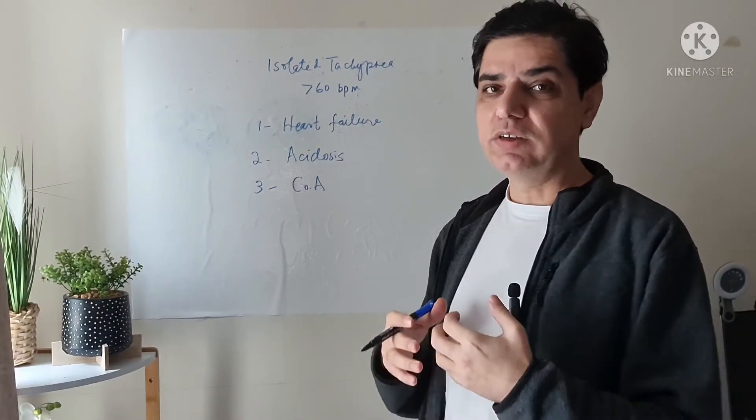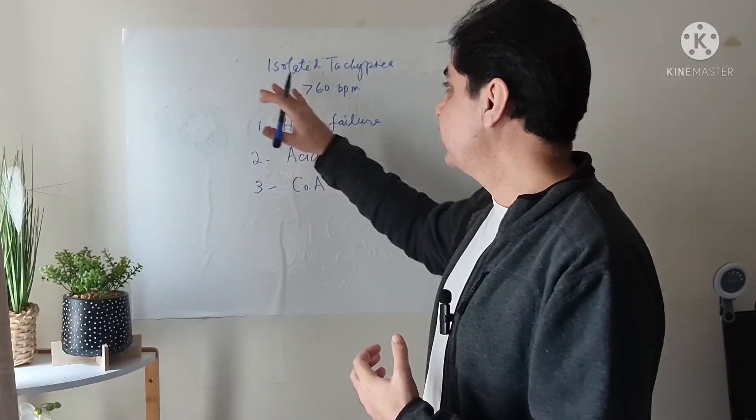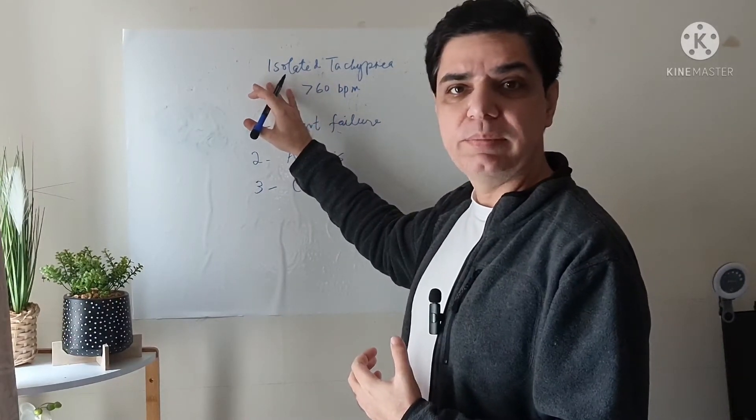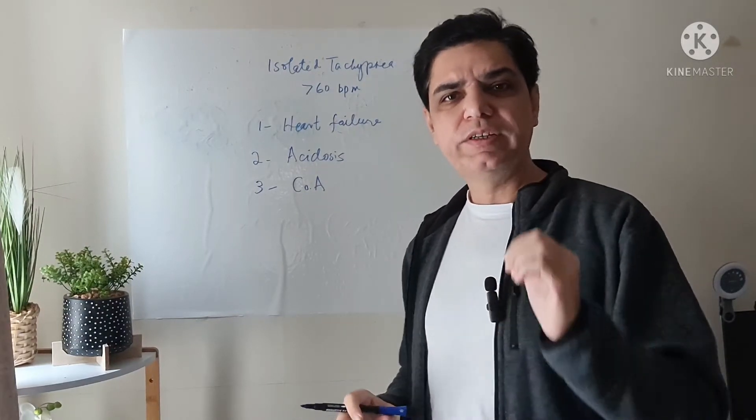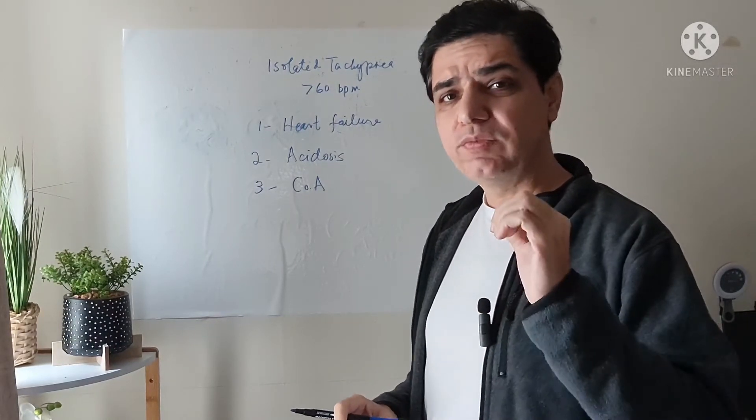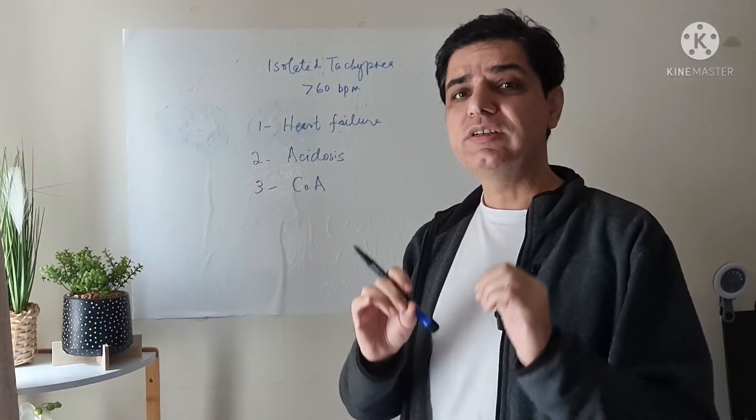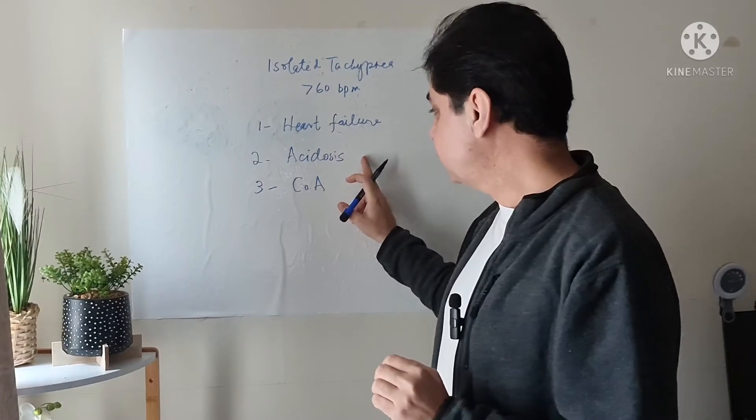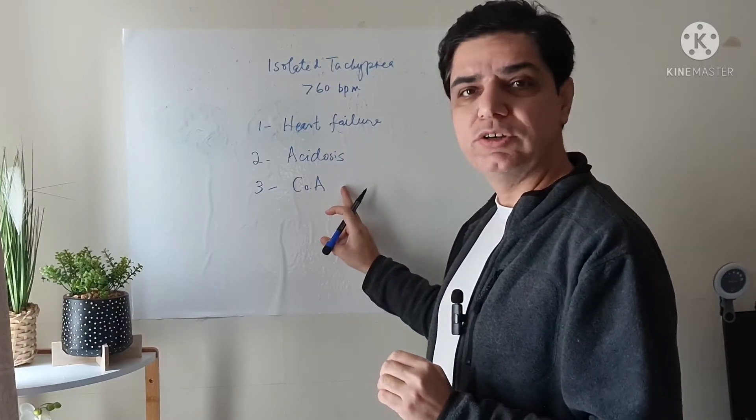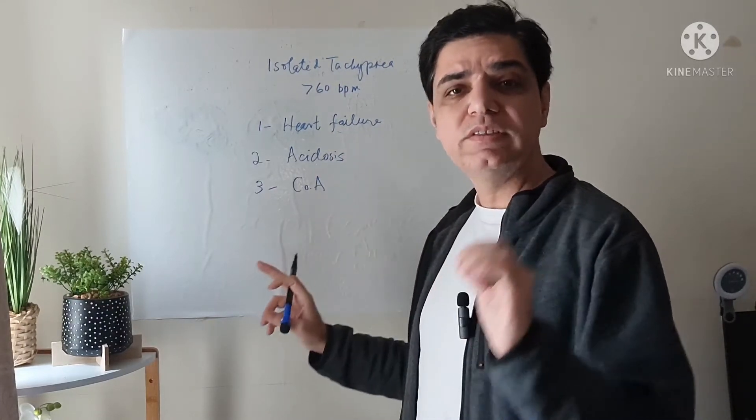That can lead to shock, that can lead to signs of heart failure, and that can lead to isolated tachypnea as well. So the three common causes of isolated tachypnea in absence of other findings, especially when the chest is clear to auscultation: number one is heart failure, number two is acidosis, number three is coarctation of aorta.